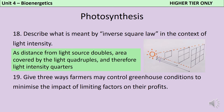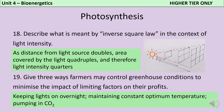Farmers can control greenhouse conditions by keeping lights on overnight so that light is not a limiting factor, maintaining a constant optimum temperature so that temperature isn't a limiting factor, and by pumping in carbon dioxide — they can literally use a dry ice machine like you would use in the theatre to produce smoke.